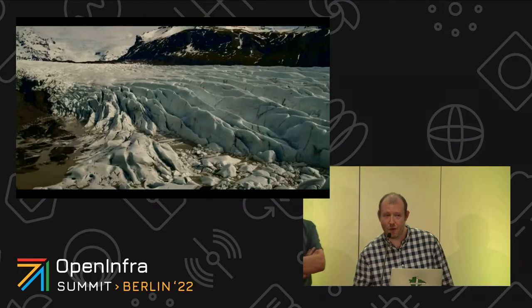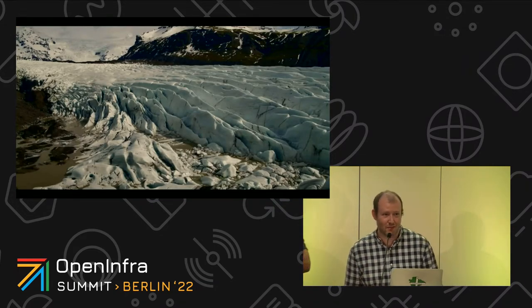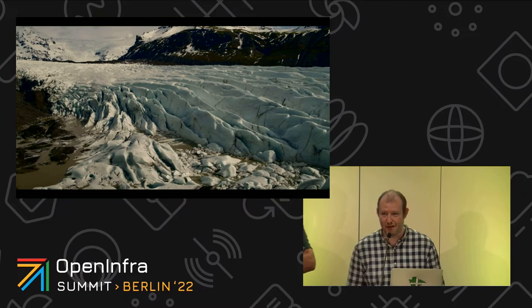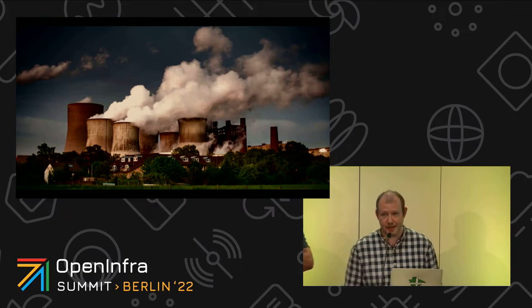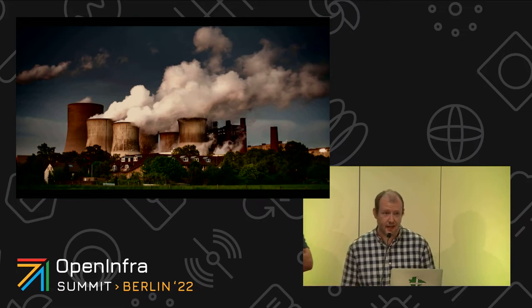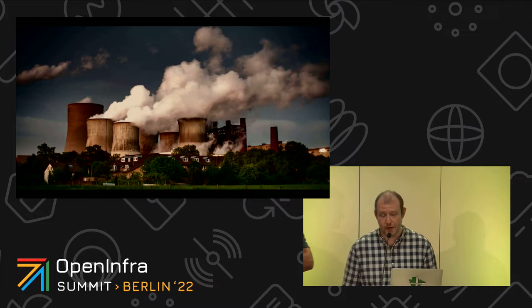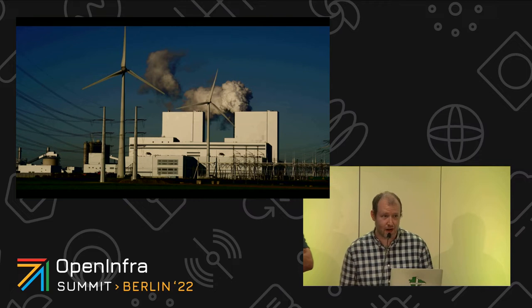So let's start with the why. Everyone knows the problem of greenhouse gases. A big chunk of the greenhouse gases that get emitted are caused by power plants — the electricity industry is a big polluter. They try to mitigate this problem.